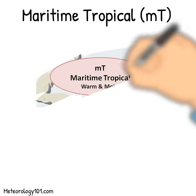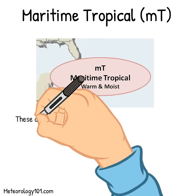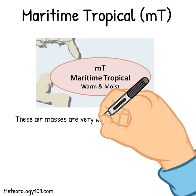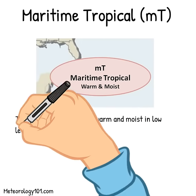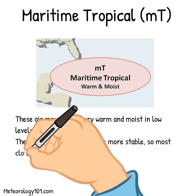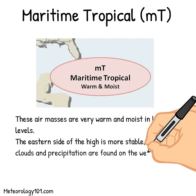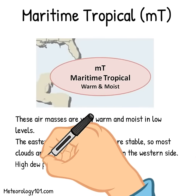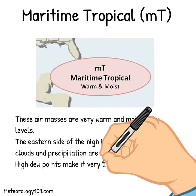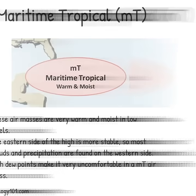Maritime tropical air masses are very warm and moist in low levels. The eastern side of the high is more stable, so most clouds and precipitation are found on the western side. High dew points make it very uncomfortable in a maritime tropical air mass.